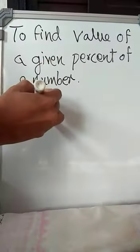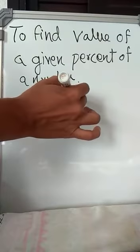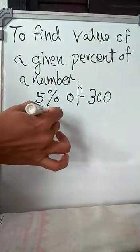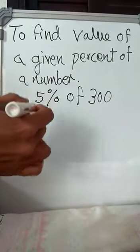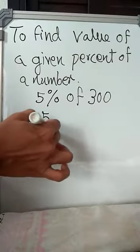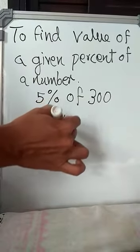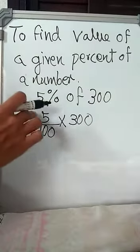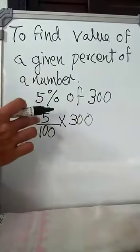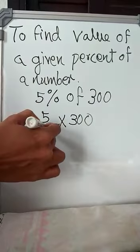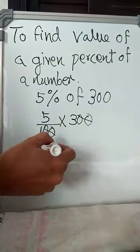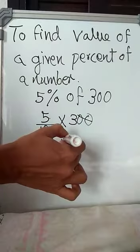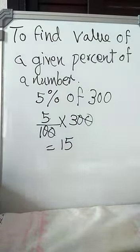Now next example. You have to find 5% of 300. How will you find it? What did I say? 5% means how will you write? 5 by 100. Then of you will write as multiplied by 300. So 5% of 100 is equal to 5 by 100 into 300. Here also two zeros you can cut. Then you will get what is remaining, 5 and 3. 5 into 3 is 15, so the answer will be 15.